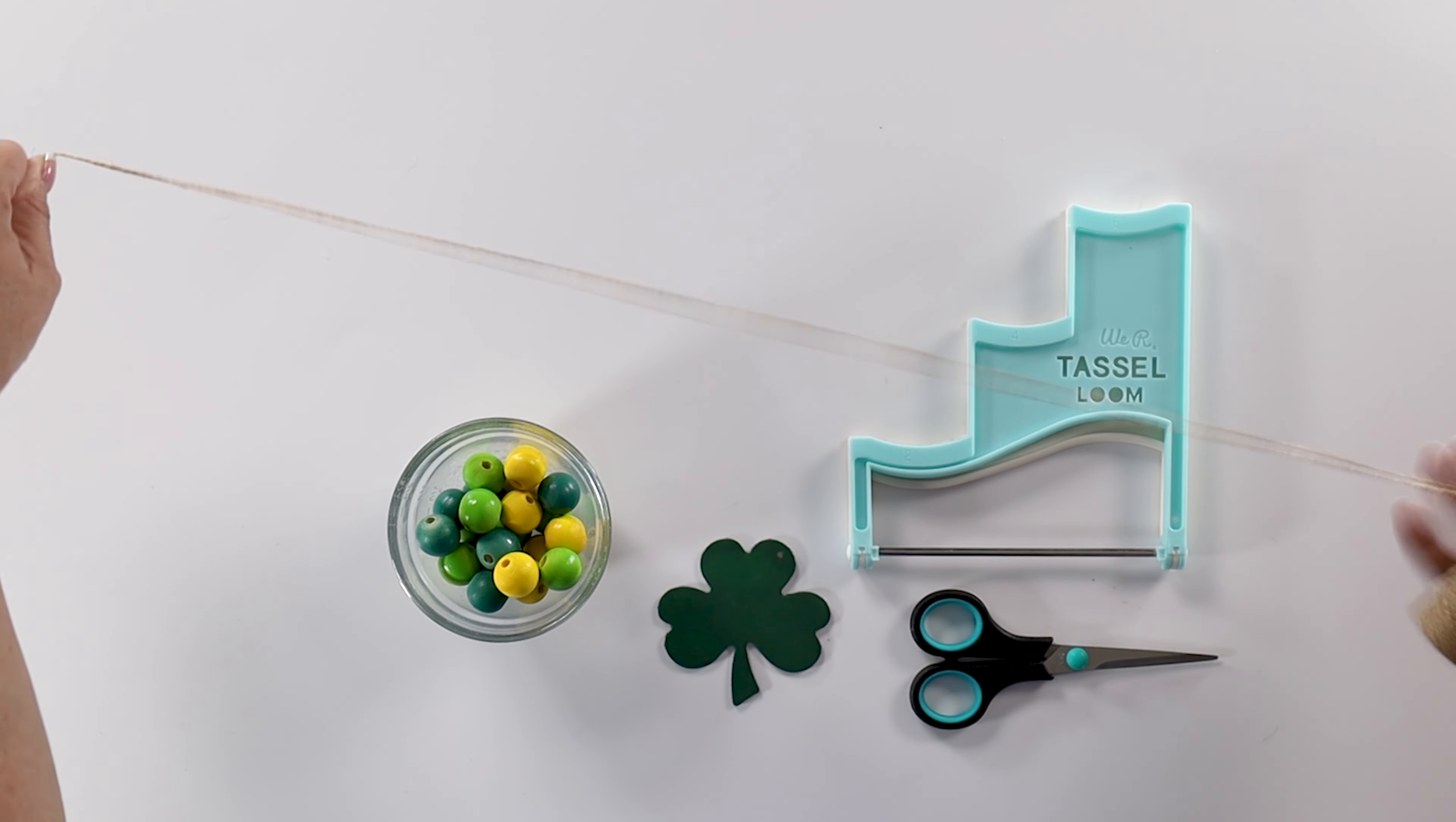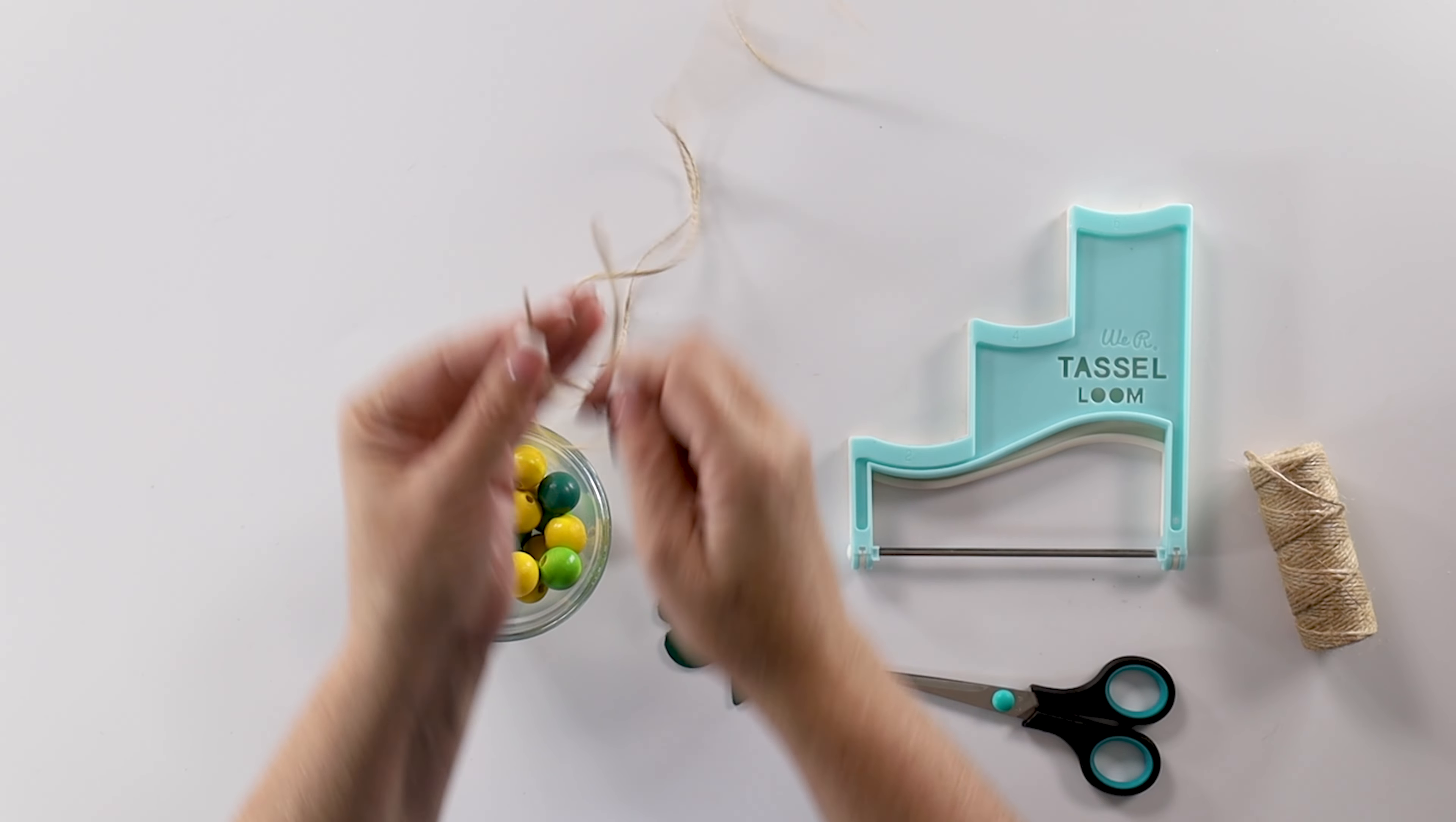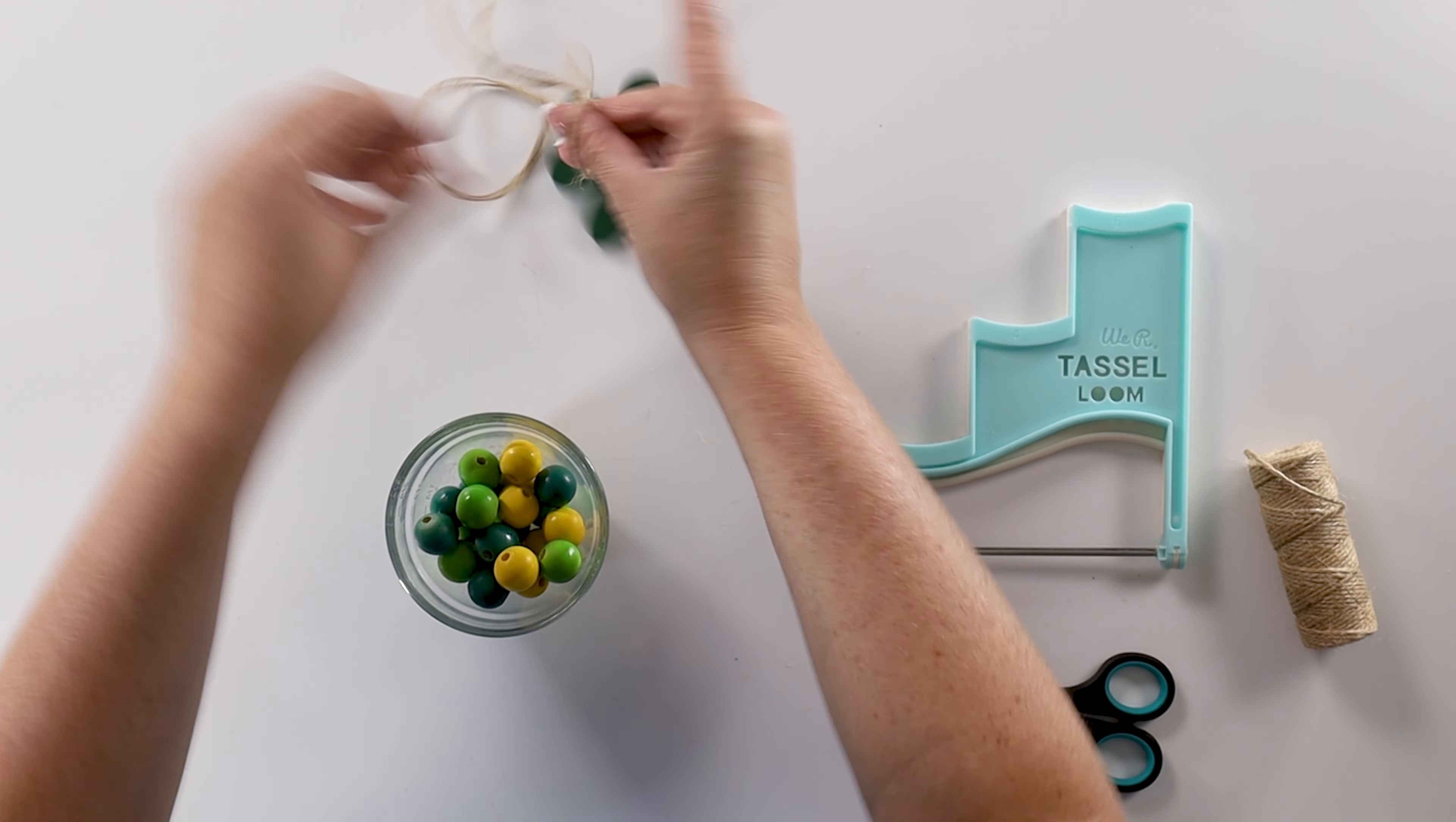So now let's assemble our beaded garland. I'm going to start with a fairly long piece of twine. I don't know exactly how long to make it, so I'm going to make it longer than I need it to be. That's probably about a yard. And then I'm going to string that through my hole. And then I'm just going to loop it through itself.